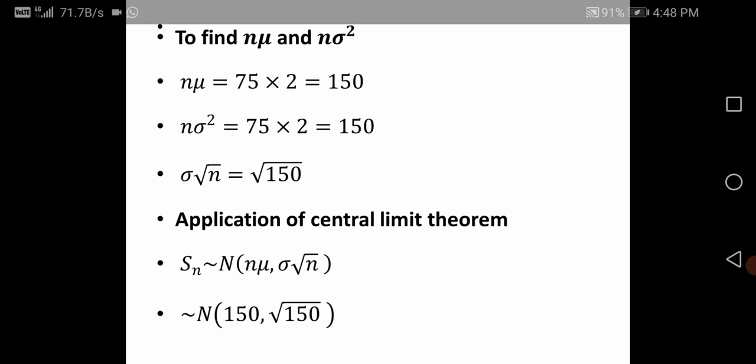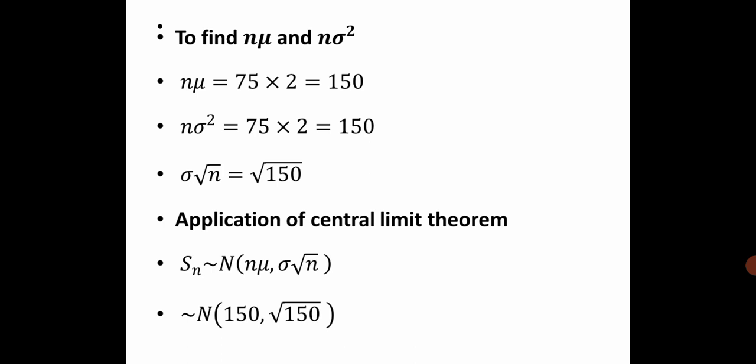To find n*mu and n*sigma-squared: from the question, n equals 75. Therefore, n*mu equals 75 times 2, which equals 150. n*sigma-squared equals 75 times 2, which equals 150. From this, sigma times root n equals root 150. Application of Central Limit Theorem: Sn is approximately N(n*mu, sigma*root(n)), that is N(150, root 150).